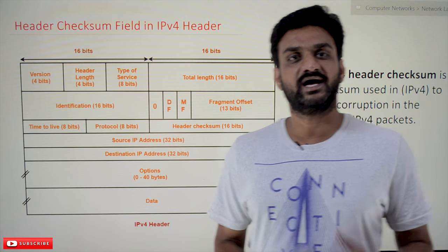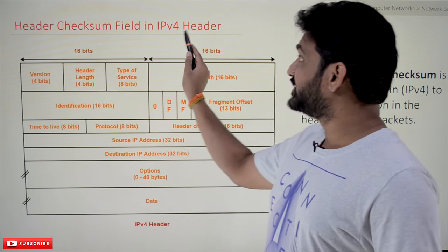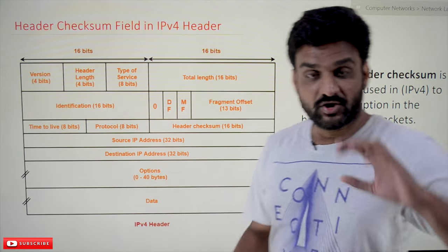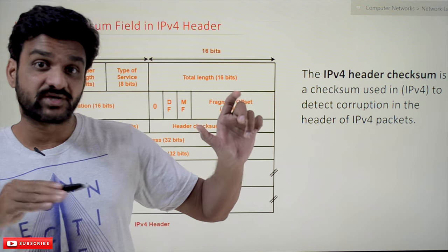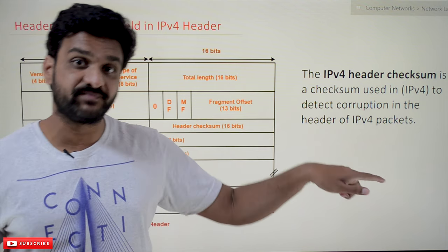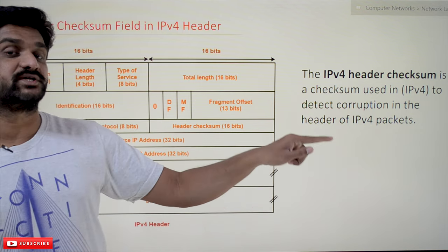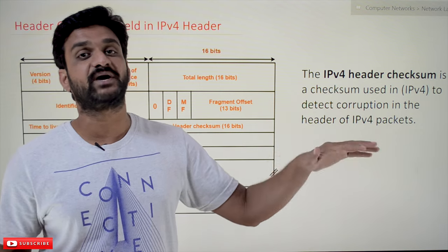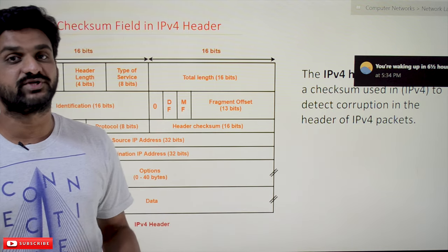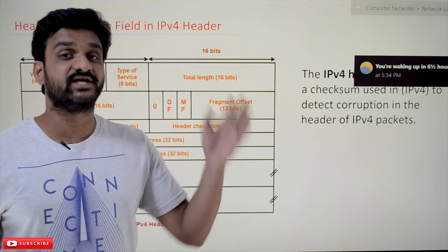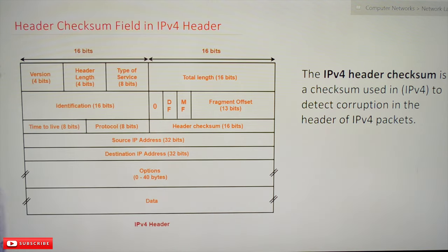Hi, welcome to Learning Monkey. I am Vikram. In this class we'll try to understand the header checksum field in the IPv4 header. The concept of Time to Live, which is the header field of the third row of the IPv4 header, has already been discussed in our previous video. If you haven't watched that video, please watch that and come back. Every video in our channel is part of a course or playlist, so follow the entire course for better understanding. The playlist link is in the description below.